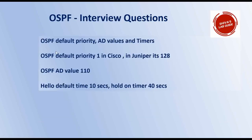For any routing protocol — BGP, RIP, OSPF, or ISIS — you should know its priorities and administrative distance values. OSPF default priority in Cisco is 1, and in Juniper it is 128. Any router with a higher priority will take the DR role, so you need to be aware of default priority values and change them based on topology requirements. OSPF's administrative distance (AD) value is 110. The default hello timer is 10 seconds and the dead timer is 40 seconds.